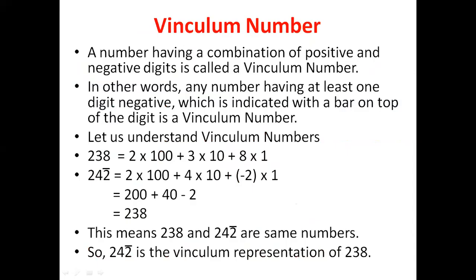A number having a combination of positive and negative digits is called a Vinculum Number. In other words, any number having at least one digit that is negative — indicated with a bar on the top of the digit — is a Vinculum Number.